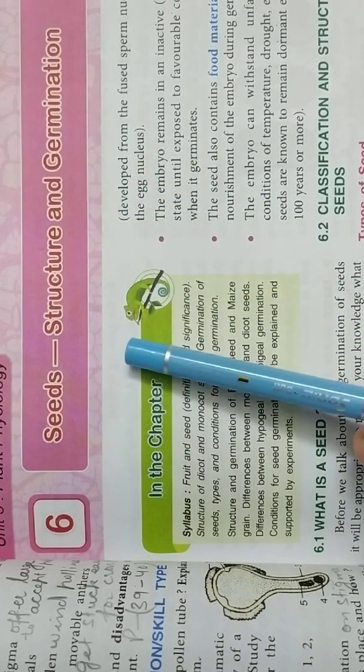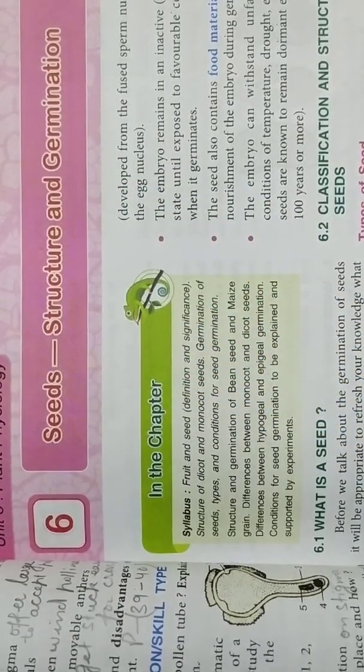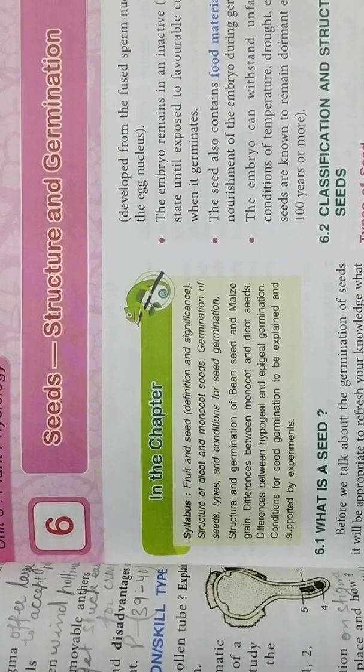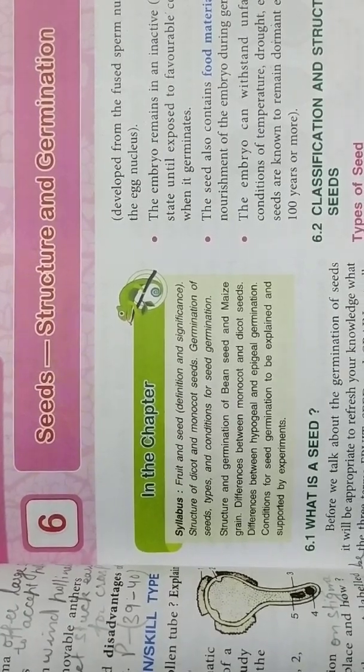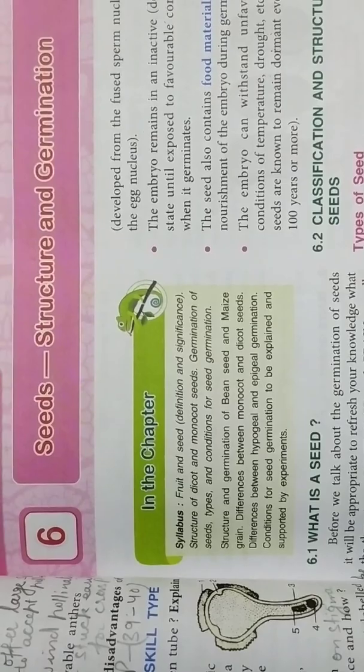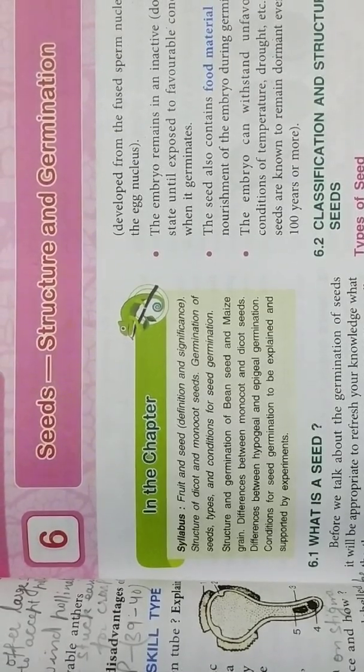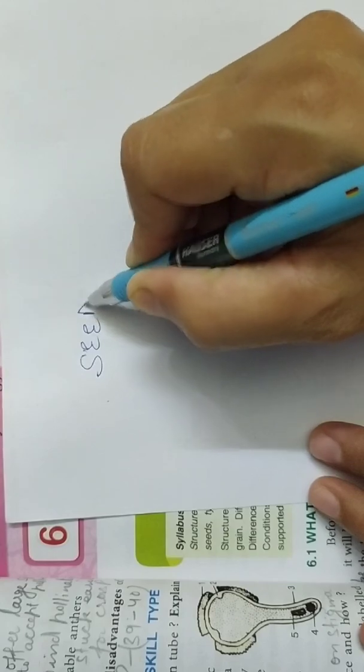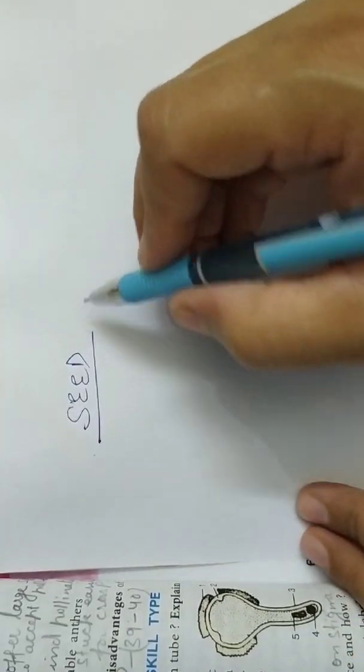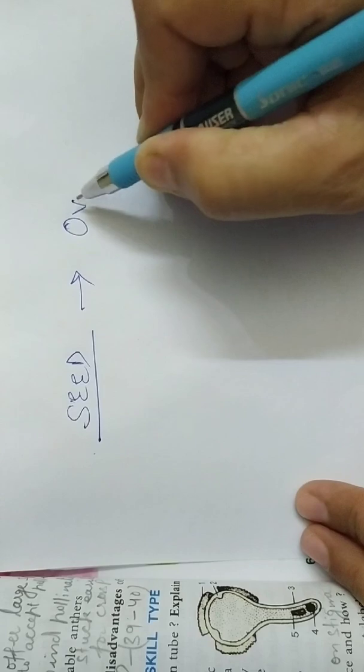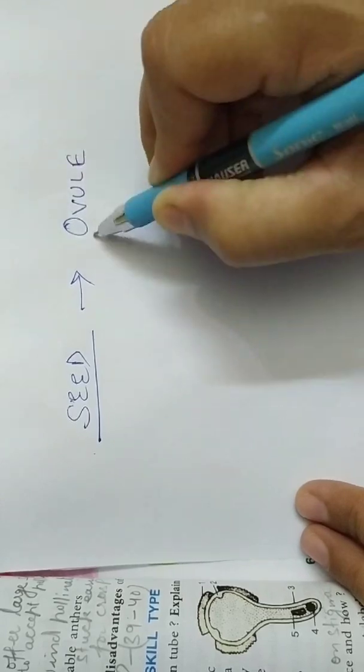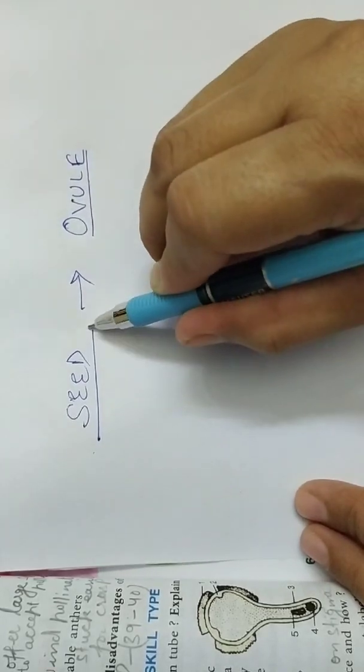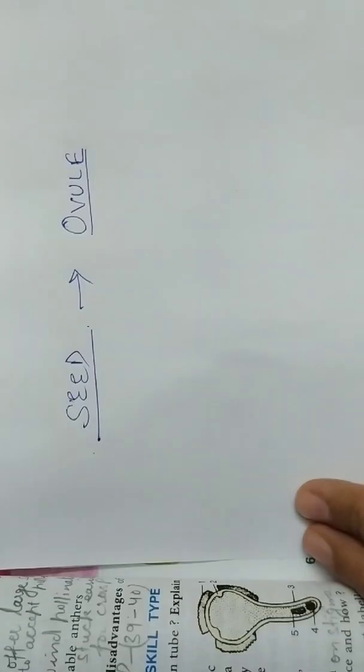In the previous chapter you have studied pollination and fertilization. And you all know that after fertilization ovary forms the fruit and ovule forms the seed. After fertilization ovule forms the seed and ovary forms the fruit.